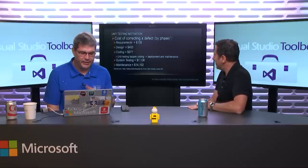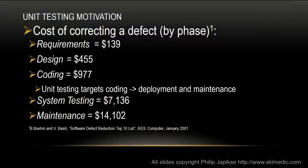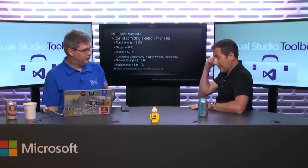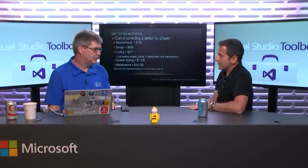I found this in an IEEE magazine from 2001, so the numbers are dated, but it shows the difference in how much it costs a company based on where you find the bug. If you find the bug in requirements, let's say that's 100 dollars. If you find it in design, it's almost five times that. When you're coding, almost 10 times that. And if you go all the way down to maintenance, it's significantly larger. To fix something in production, you have to go through a release cycle — you could have been losing money because you were not charging customers.